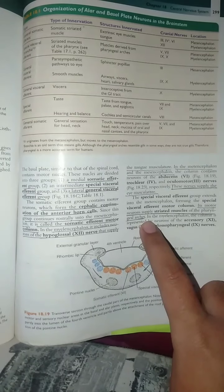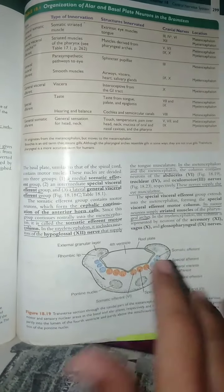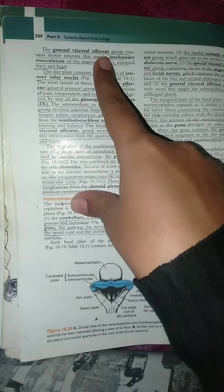We have general visceral efferent. General visceral efferent supplies involuntary musculature of the GIT, intestine, respiratory tract, and heart.